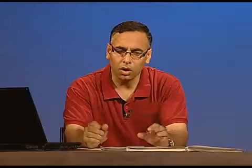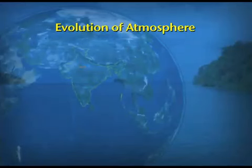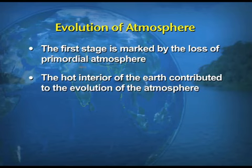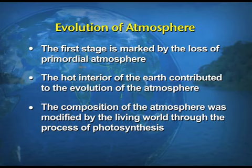We can also talk about the evolution of the atmosphere — there are three stages in the evolution of the present atmosphere. The first stage is marked by the loss of primordial atmosphere. The second stage: the hot interior of the Earth contributed towards the evolution of the atmosphere. Finally, the composition of the atmosphere was modified by the living world through the process of photosynthesis. Overall, the Earth and its atmosphere were not the same in the initial stages when it was formed.